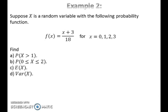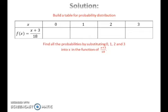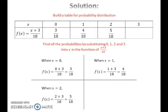Now let's look at Example 2. Since we are given a function, build a table for the probability distribution. Find all the probabilities by substituting 0, 1, 2, and 3 into x in the function. When x = 0, P = 3/18; when x = 1, P = 4/18; when x = 2, P = 5/18; and when x = 3, P = 6/18. Now that the probability distribution is complete, it can be used to find probability, expected value, and variance.